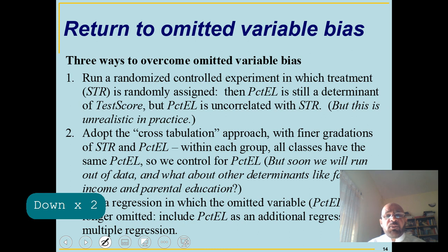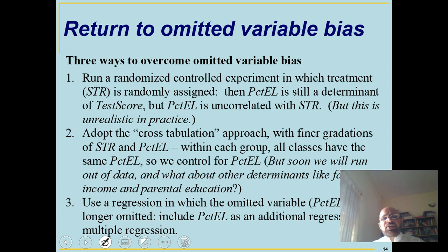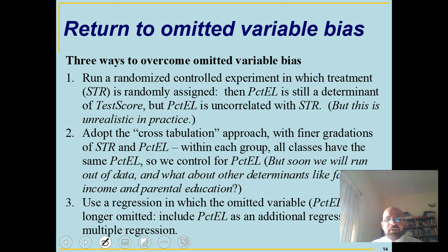There are three ways to overcome omitted variable bias. The first is to randomly assign students to small, large, or medium class size — in that case, percentage English learner remains a determinant of test score but becomes uncorrelated with student-teacher ratio. The second is the tabular approach we demonstrated, but with more than a couple of regressors it becomes very difficult to interpret. The third and most practical approach is regression analysis.